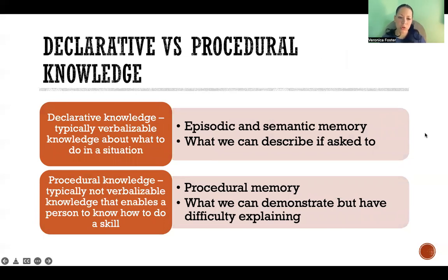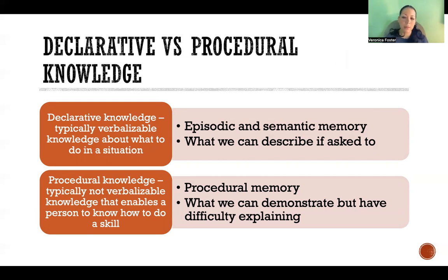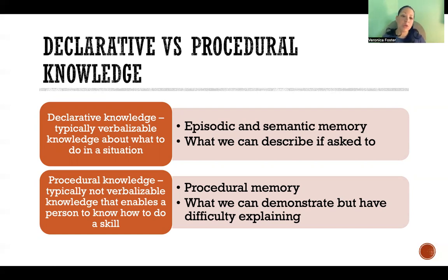Declarative knowledge includes episodic and semantic memory — things we can verbalize, tell the story of, or explain with words. Procedural knowledge comes from procedural memory — things we need to demonstrate and would have great difficulty explaining verbally. It's not that we couldn't explain them, but for most of us, something like tying shoes requires actually going through the motions and thinking it through in order to formulate a verbal explanation.